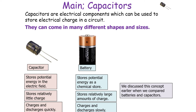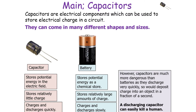A capacitor stores potential energy in the electrical field; a battery stores potential energy as chemical energy. A capacitor stores relatively little charge whilst a battery stores relatively large amounts. A capacitor can charge and discharge quickly whilst a battery can only charge and discharge slowly. Capacitors are much more dangerous than batteries as they discharge very quickly, depositing charge into an object in a fraction of a second — a discharging capacitor can easily kill a human, but a discharging battery is unlikely to do so.